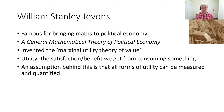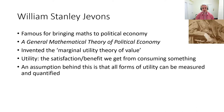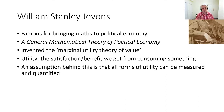More or less, Jevons is famous because he brought mathematical and statistical methods into what used to be political economy, in his book A General Mathematical Theory of Political Economy. He's also famous for inventing the marginal utility theory of value. Utility is basically the satisfaction or benefit we get from consuming a thing, and the assumption here is that utility is kind of meaningless unless we can measure and quantify it - we've got to be able to decide what utility is.